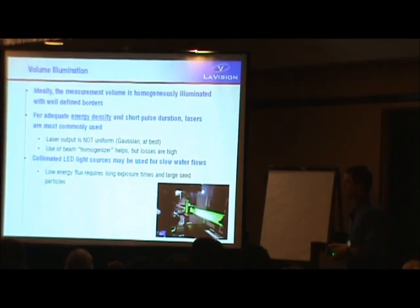Okay, illumination. Of course we have to illuminate the flow field that we want to look at, and ideally we would have some illumination device that would homogeneously illuminate the volume that we're interested in with very sharp borders. So we have a very well-defined metric volume. Of course, ideal case. In reality we have to live with some limitations.